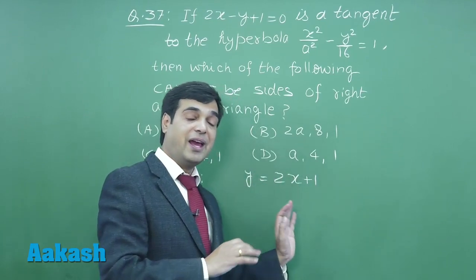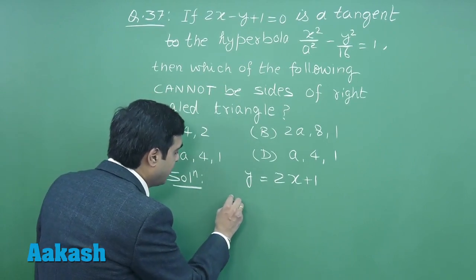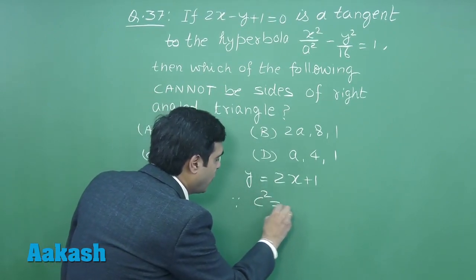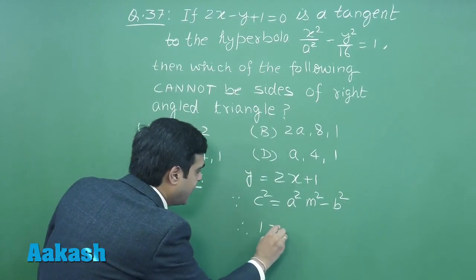We know the equation of tangent to the hyperbola. Then c² = a²m² - b². Following it, we have c² = a²m² - b². Therefore, we get the value for a² = 17/4.